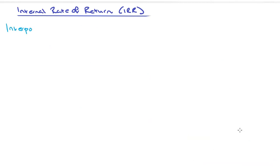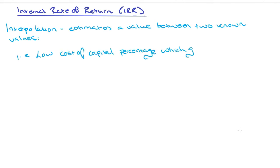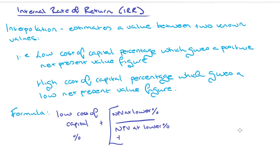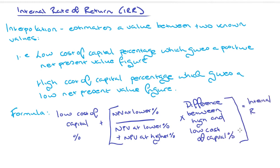Interpolation estimates a value between two known values—the low cost of capital percentage which gives a positive net present value figure, and the high cost of capital percentage which gives a low net present value figure. We can work out between the two at what point we're going to be breaking even. The formula is: low cost of capital % plus the NPV at lower % divided by the NPV at lower % plus the NPV at higher %, then times that by the difference between the high and low cost capital percentage. That will give you your internal rate of return.